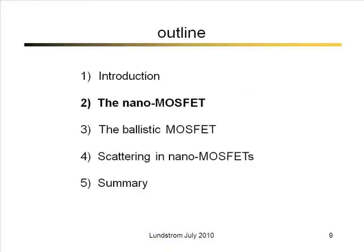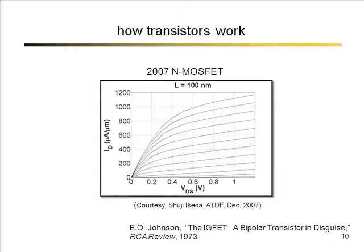Here's the outline. We'll talk about how we think about a nano MOSFET, then a ballistic MOSFET, then we'll put scattering in, and then we'll be about done.